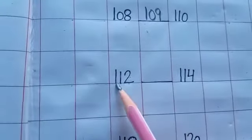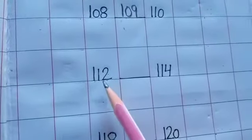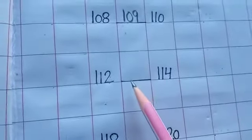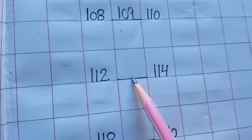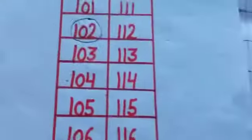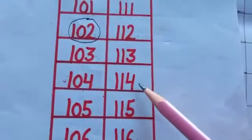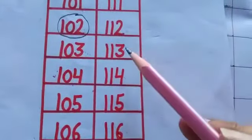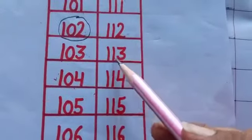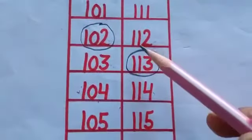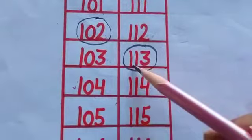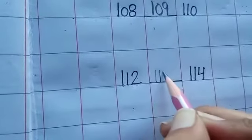Next. 112 and 114. Aap dekho, 112 and 114 ke between mein. Means, beech mein middle number jo hai, wo kya aayega? 112 and 114. Aap in dono ke beech mein kya number aaya hai? 113. Aap dekho, 112 and 114 ke beech mein kya aaya hai? 113. Tau, wo yahan pe kya likhoge? 113. 112, 113 and 114.